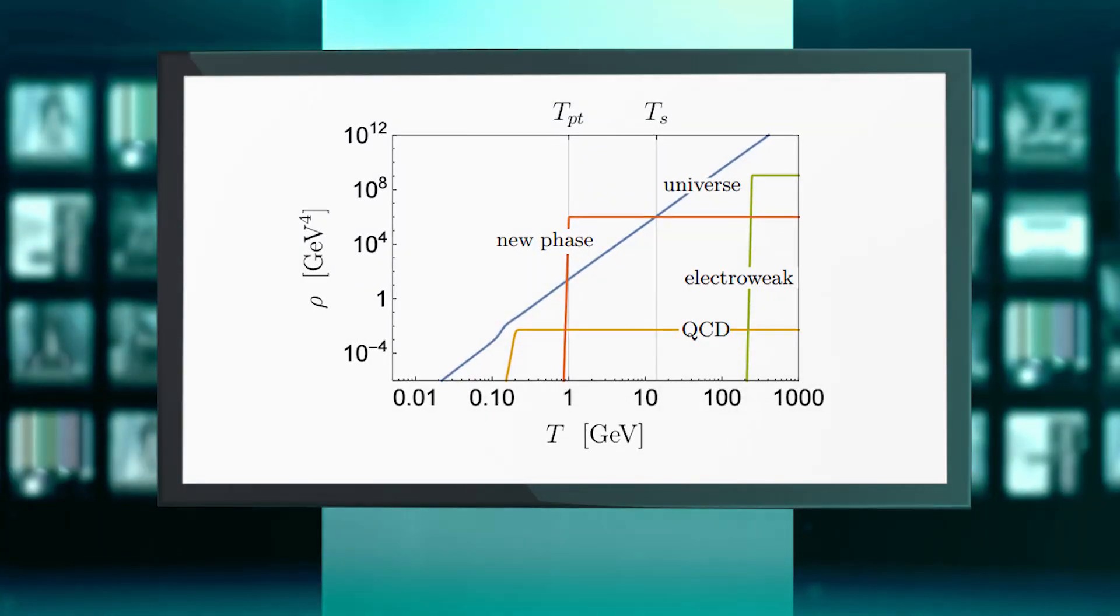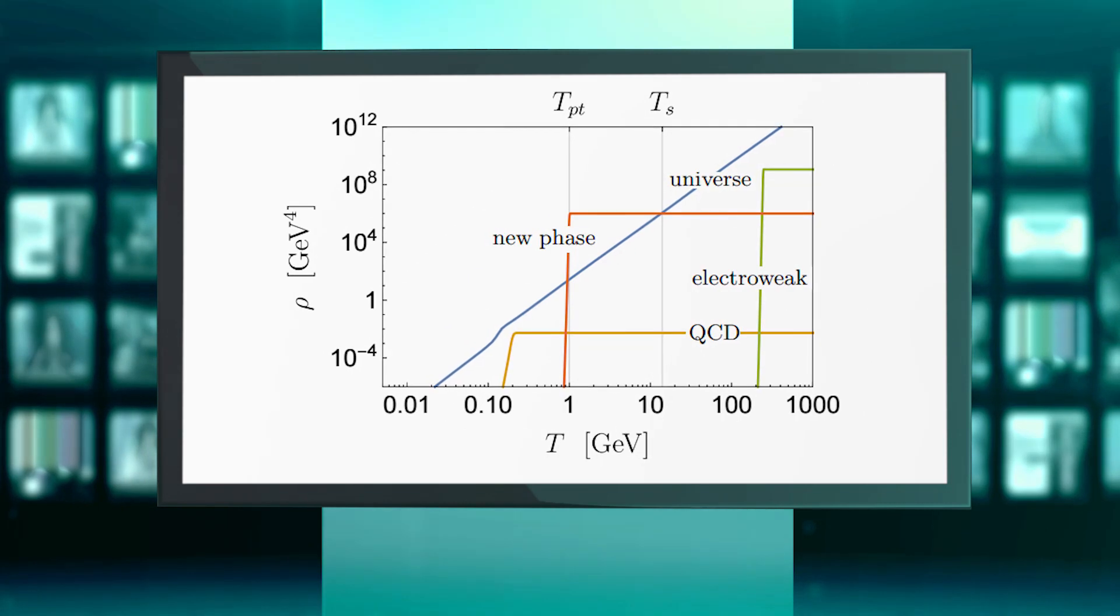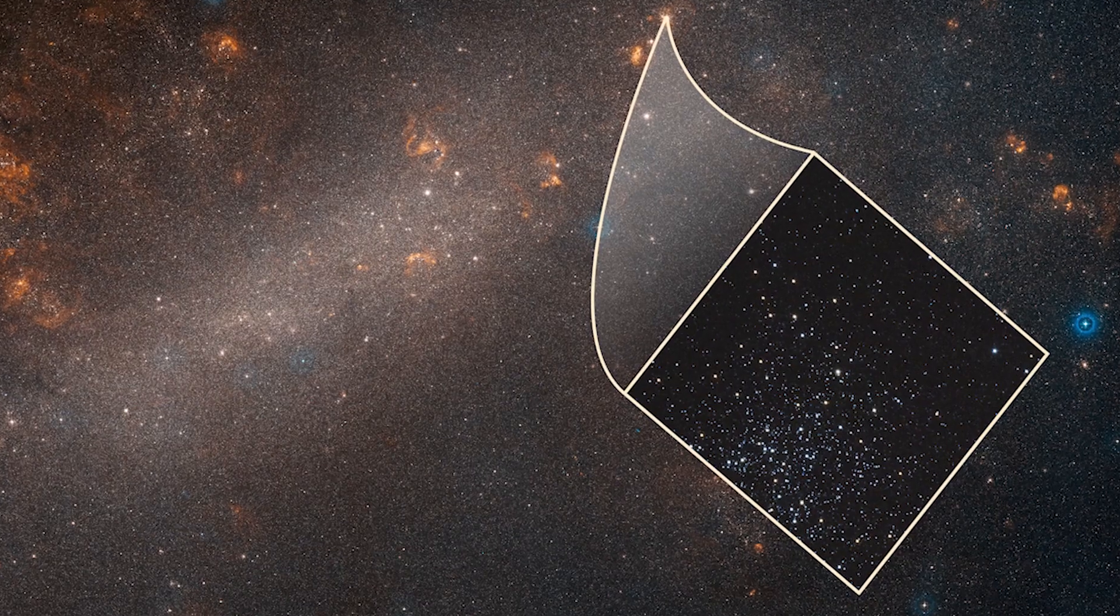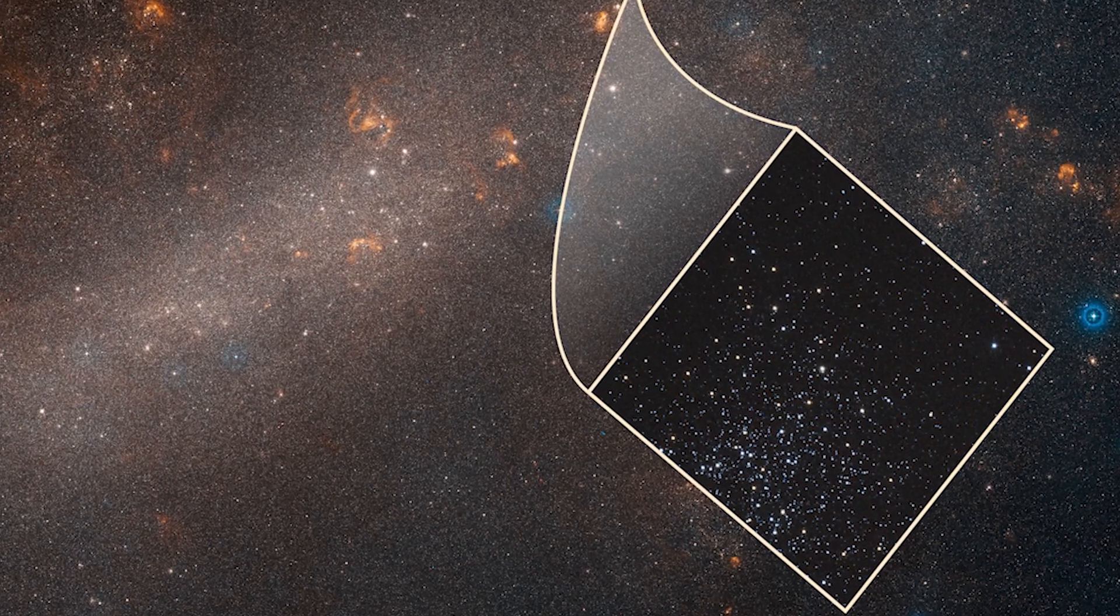For this, the energy density of the vacuum during inflation needs to be vastly stronger. Also, the universe stopped inflating at some point to make way for regular Hubble expansion.